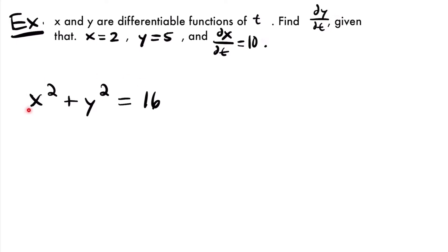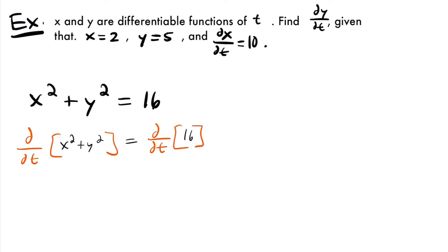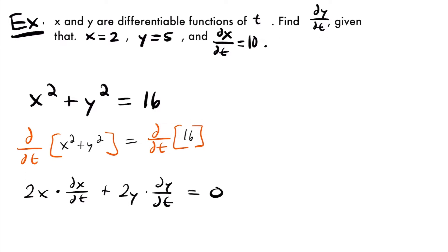Let's take the derivative of both sides of this equation with respect to time. That gives us d/dt of x squared plus y squared equals d/dt of 16. The derivative of x squared with respect to t will be 2x times dx/dt, because we're taking the derivative with respect to t, not x. Then similarly for y squared, we get 2y times dy/dt. And the right side equals zero because the derivative of a constant is always zero.